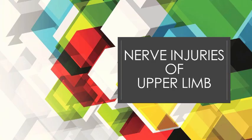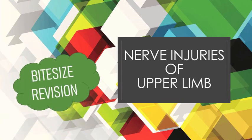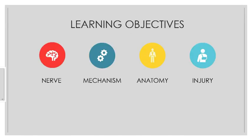We're going to bring you a brief revision recap summary of some of the common nerve injuries of the upper limb. This is part one of three similar sessions. We aim to break it down into individual nerves of the upper limb, talk about common mechanisms of injury, relate that briefly to the relevant anatomy, and then discuss the resulting injury or deformity. The anatomy covered here is simplified, so continue to read around and use your anatomy session material. This is a bite-sized recap for your exams. In this first session, we'll talk about the radial nerve and the axillary nerve.